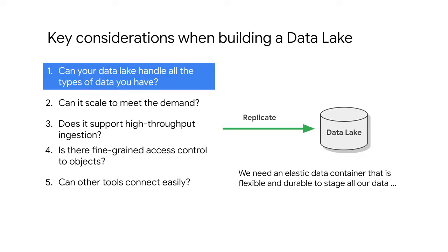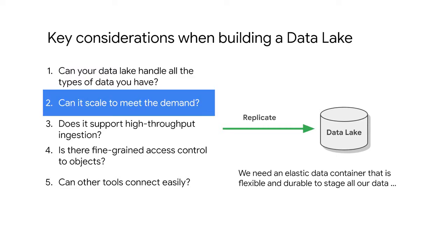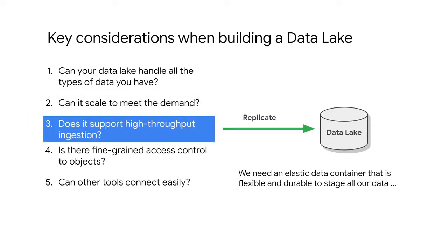One: does your data lake handle all the types of data that you have? Can it all fit into a cloud storage bucket? If you have an RDBMS, a relational database, you might need to put the data not in a cloud storage bucket but in Cloud SQL, a managed database. Two: can it elastically scale to meet the demand? As your data collected increases, will you run out of disk space? Of course, this is more of a problem with on-premises systems than with cloud. Third: does it support high-throughput ingestion? What is the network bandwidth? Do you have edge points of presence?